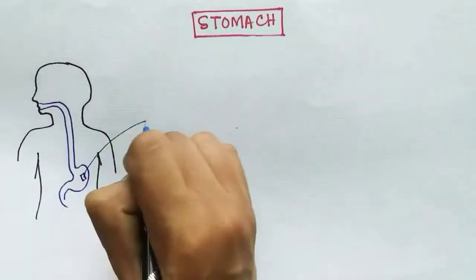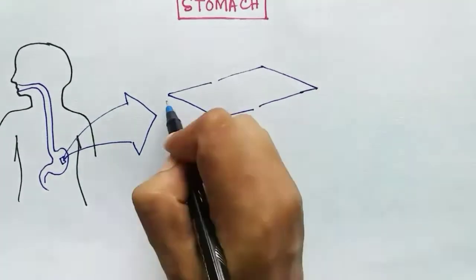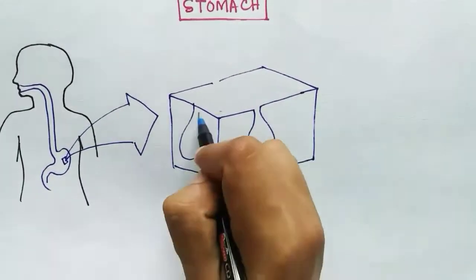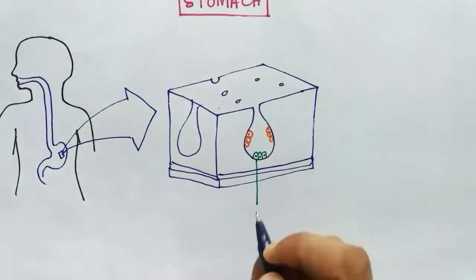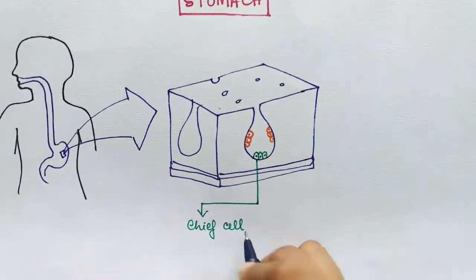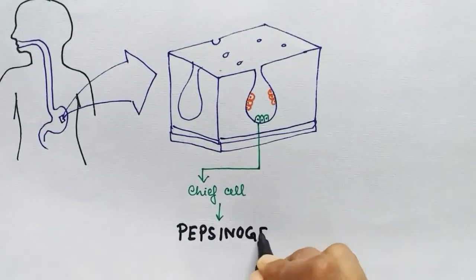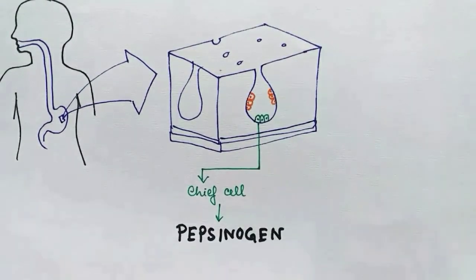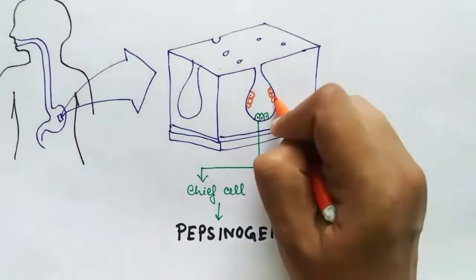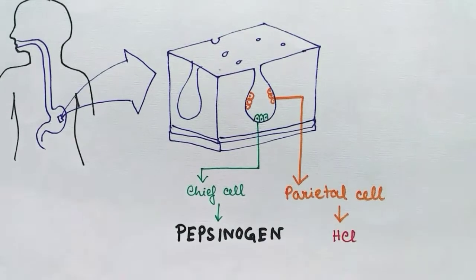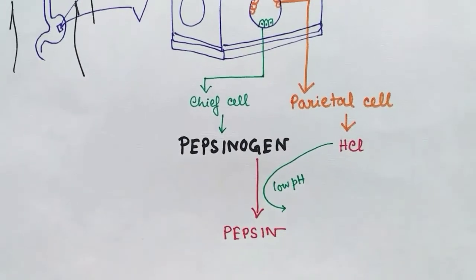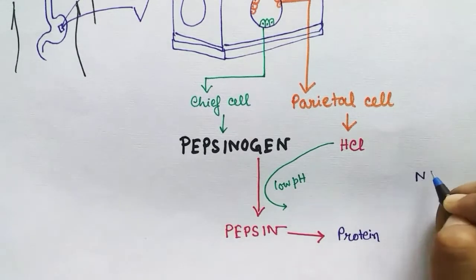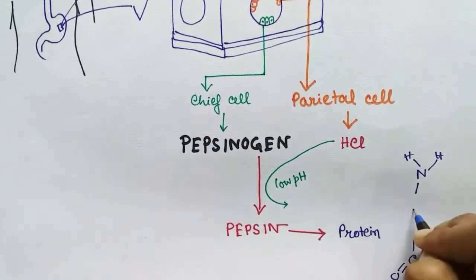Moving to the next part of the digestive system: the stomach. After digestion in the mouth, the bolus goes to the esophagus and reaches the stomach. If we cut a section of the stomach wall and zoom in, we can see some invaginations — those are the gastric glands. In the gastric glands there are chief cells which release pepsinogen, which is a pro-enzyme — it is inactive. Another type of cell, parietal cells, release HCl. In the presence of HCl the pH is lowered in the stomach, and pepsinogen is converted into pepsin.